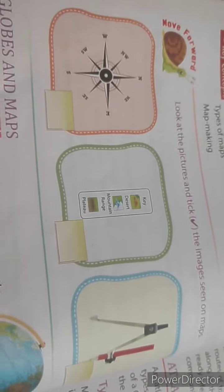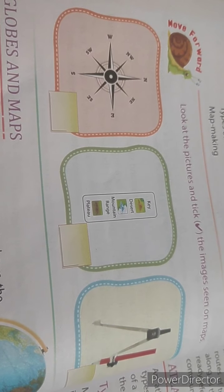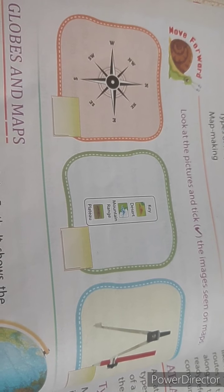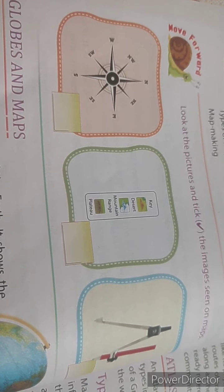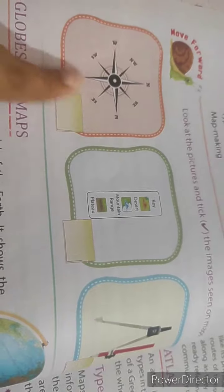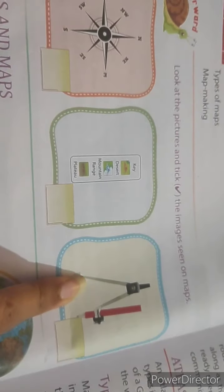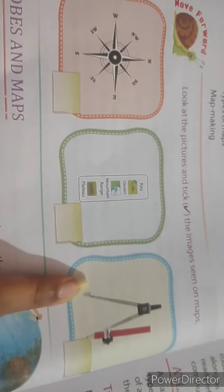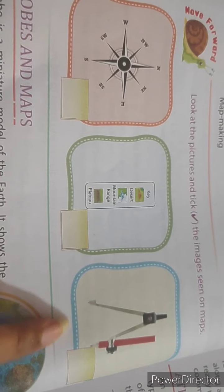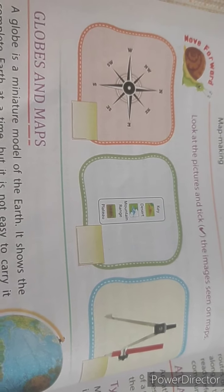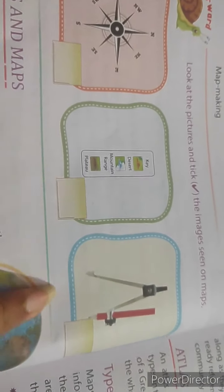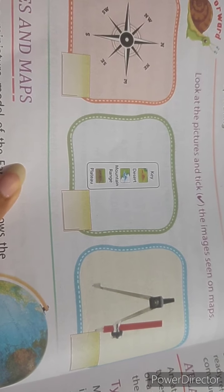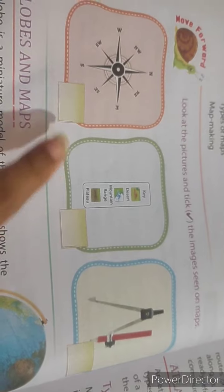Now my dear students, here is one question for you. As you have already seen a map, you have to find out which pictures you have seen on the map. Look at the pictures and take the images which you have seen on the map.